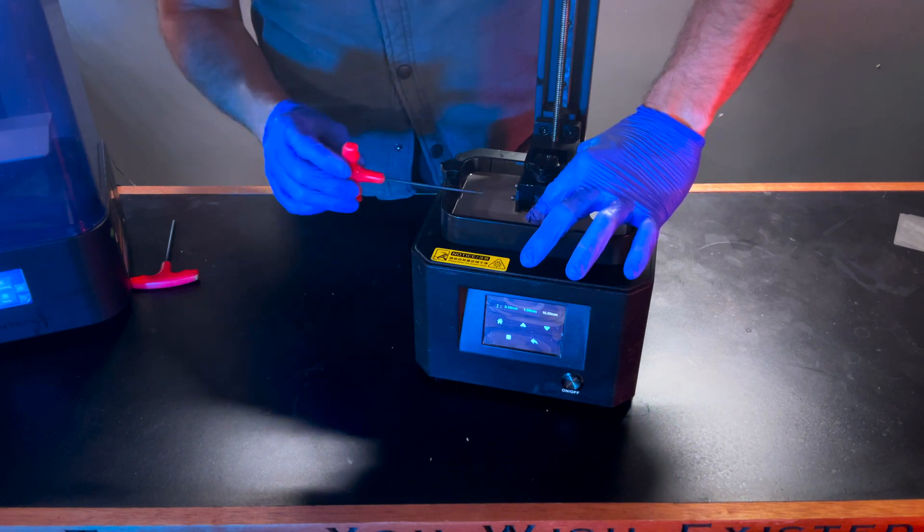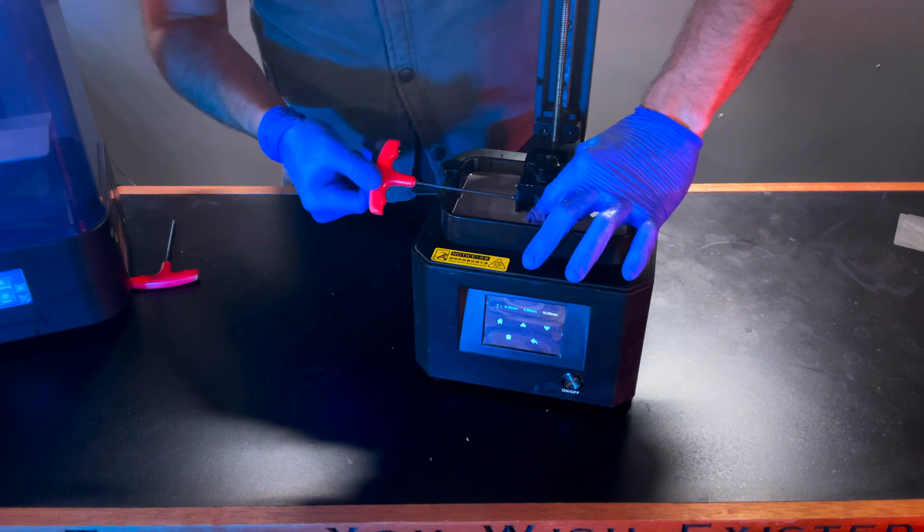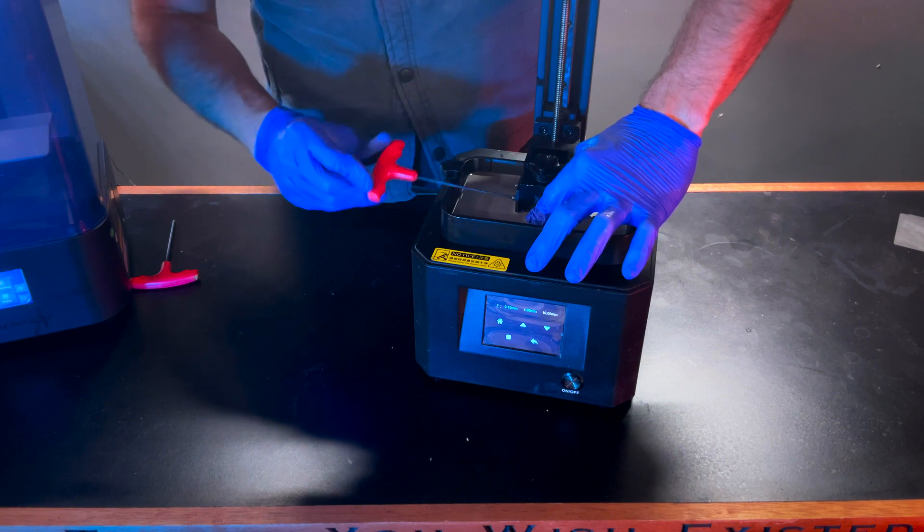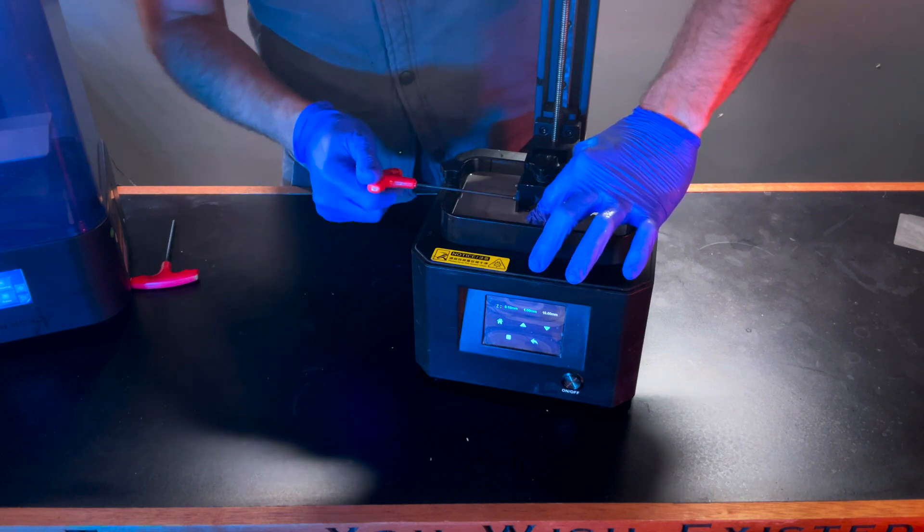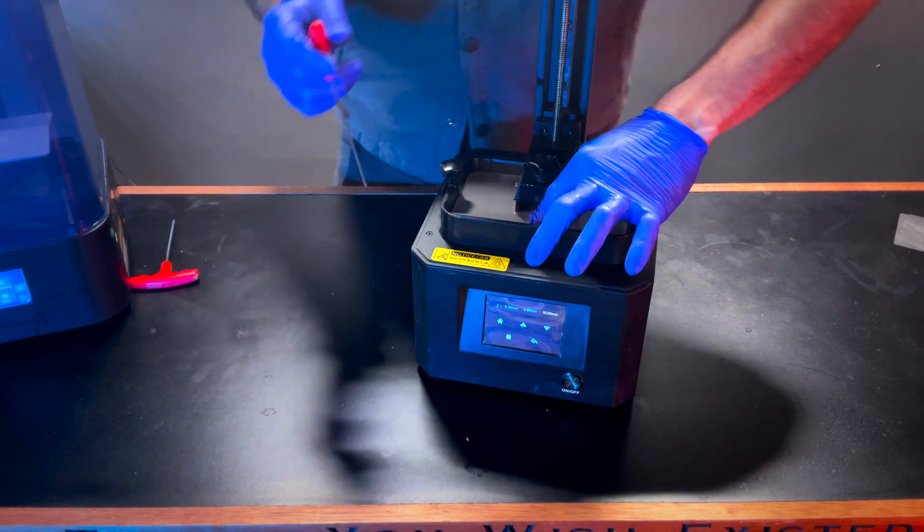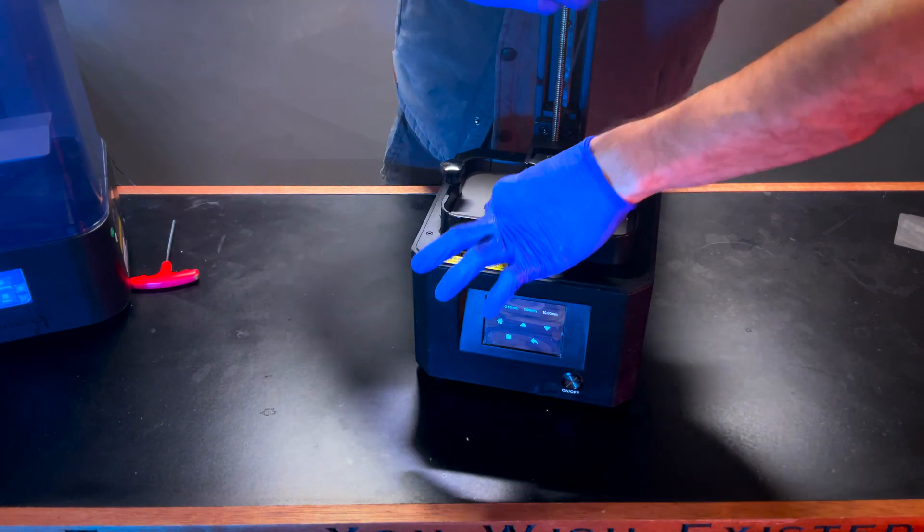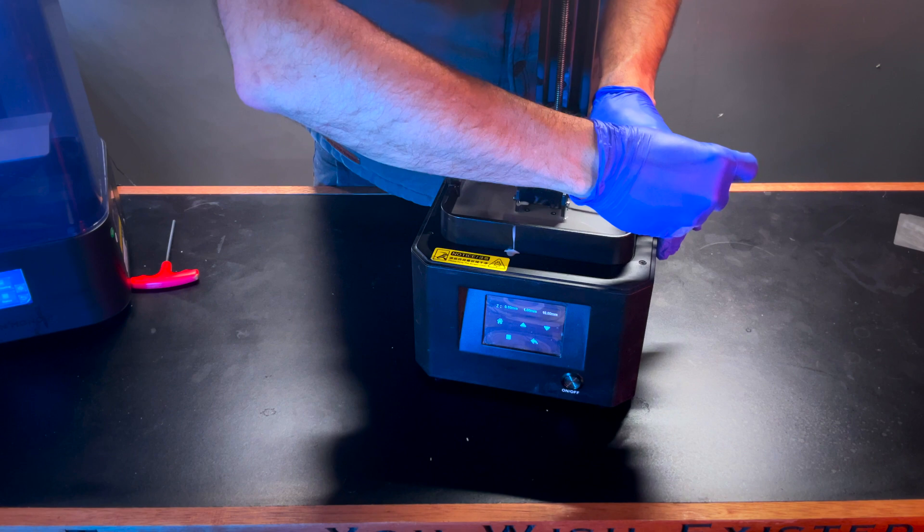And then once you've got it flush against the bottom, you're going to go ahead and just like before using a criss-cross method, alternating front to back, you're going to want to go ahead and lock into place these four screws.